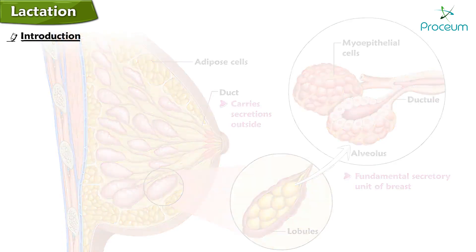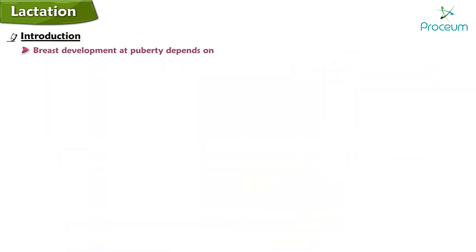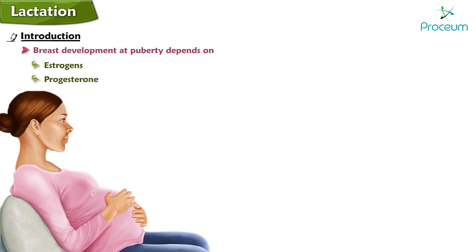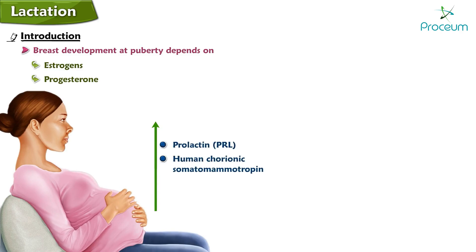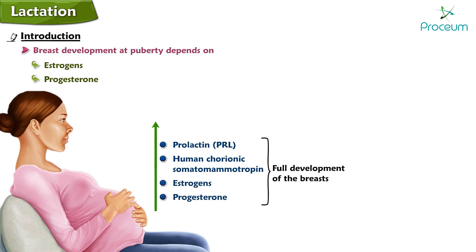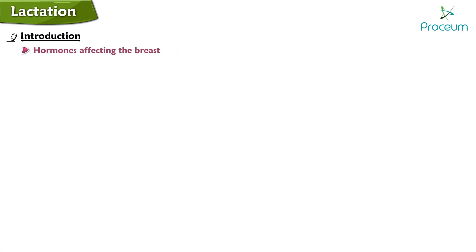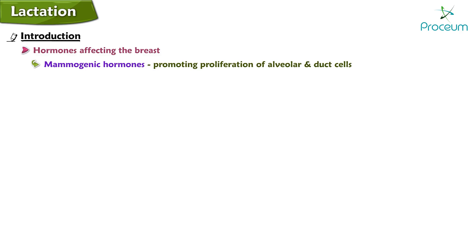The lactiferous duct carries secretions to the outside. Breast development at puberty depends on several hormones, but primarily on estrogens and progesterone. During pregnancy, gradual increases in levels of prolactin and human chorionic somatomammotropin, as well as very high levels of estrogens and progesterone, lead to full development of the breast.